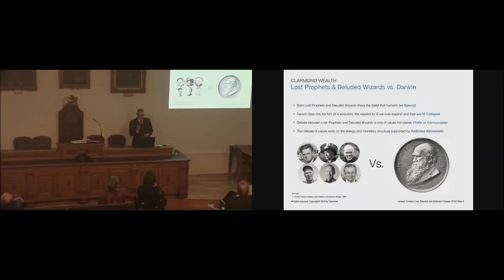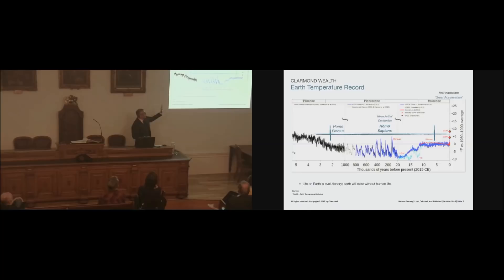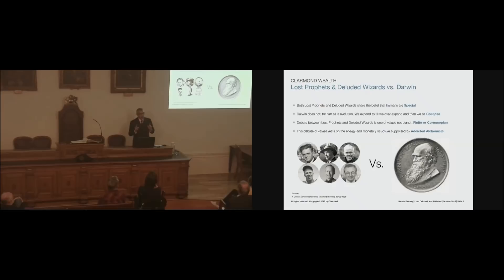But actually, they're saying the same thing. So if we go back for a moment and look at the Earth's record, what they're really saying is human beings are special. That's where they're agreeing. They're disagreeing on how to get there, but they both believe that humans are special. The man on the wall over here, Darwin, does not. He thinks it's evolutionary. We're simply going to grow, we will overexpand, and then we hit collapse, and it'll be over. So the debate between lost prophets and Deluded Wizards is not about the planet. It's about values. And they're representing two different values. But they have forgotten a third party. They have forgotten the addicted alchemists. And that's what's missing from Charles Mann's book.